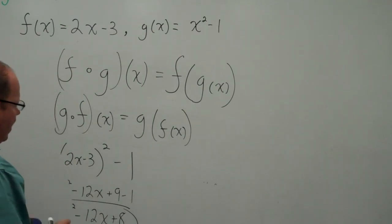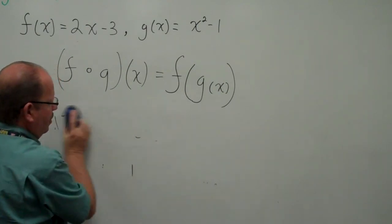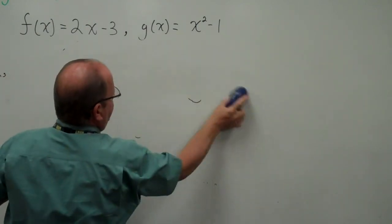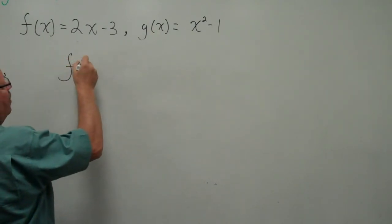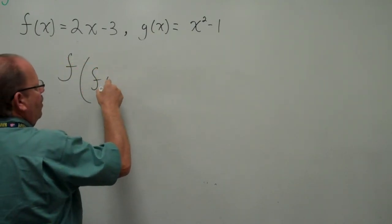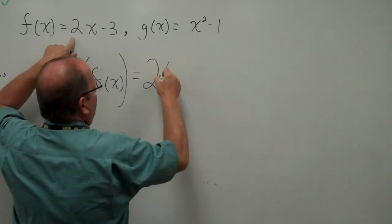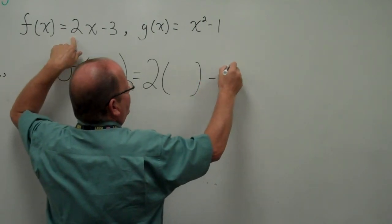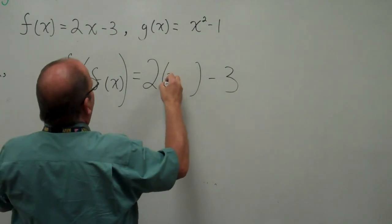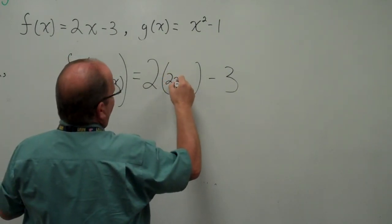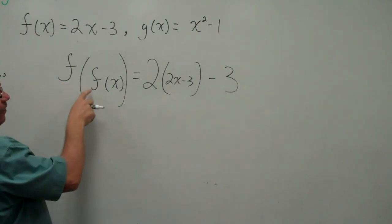Function composed of a function. Can we have f(f(x))? Well, of course we can. f(f(x)) equals, let's take f(x), 2(x) - 3, and since it's f of f(x), 2(2x - 3) - 3 goes inside. That's f(f(x)).